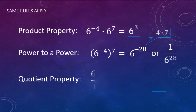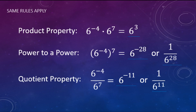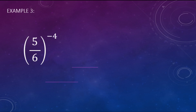For the quotient property: 6 to the negative fourth over 6 to the seventh — same base being divided, so the base stays 6 and we subtract the exponents: negative 4 minus 7 gives negative 11. Rewriting with positive exponents, that's 1 over 6 to the positive eleventh power.